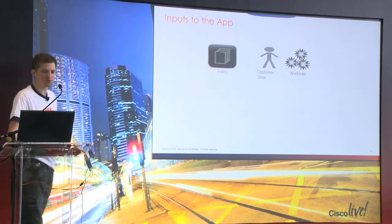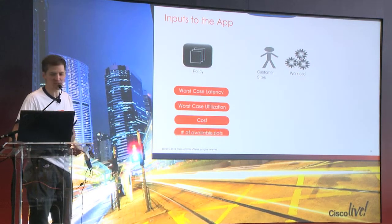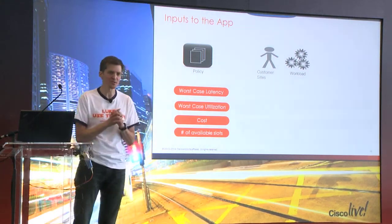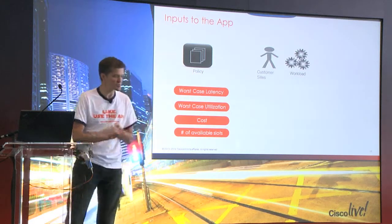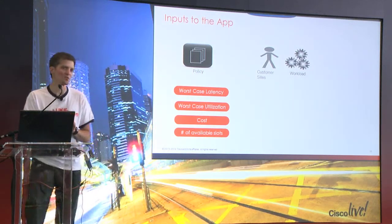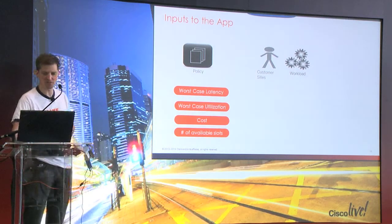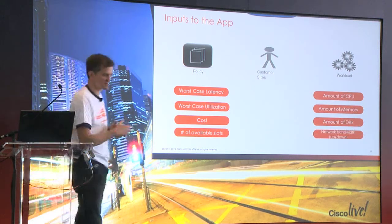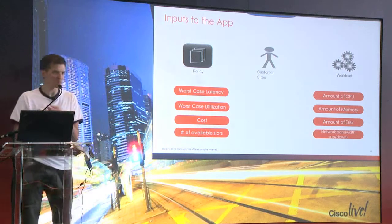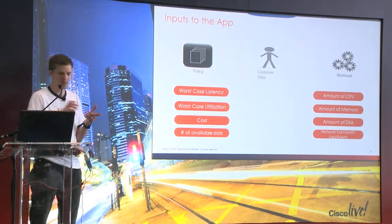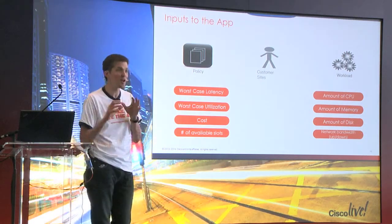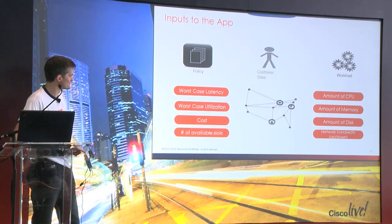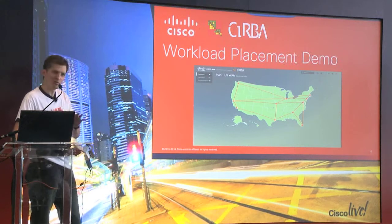In terms of the inputs to the application, there are several. A set of policy inputs — these are the minimum requirements for the workload: latency requirements, utilization requirements, and requirements on the maximum cost you're prepared to pay for that service. Obviously the list of customer sites accessing the service. From the data center perspective, the specific resources required: number of vCPUs, amount of memory, amount of disk. From a network perspective, the amount of capacity.